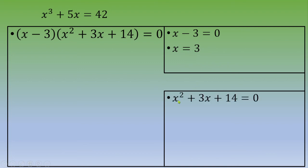Second case: x squared plus 3x plus 14 equals 0. This is a second degree equation. We would like to calculate the discriminant. This is 3 squared minus 4 times 1 times 14, and you end up with negative 47.